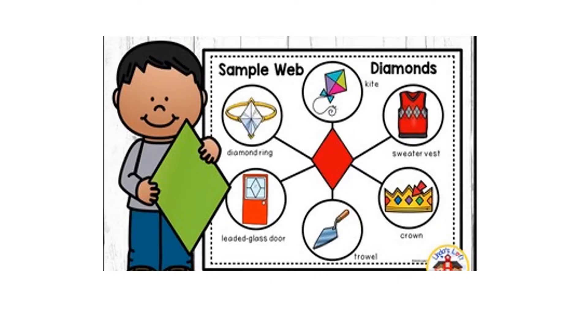What things have a shape of a diamond around you? A diamond ring. Leaded glass door. Leaded glass door has a shape of a diamond.